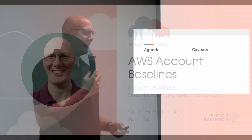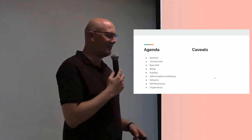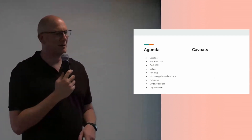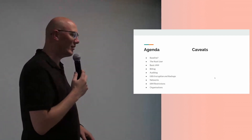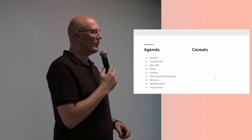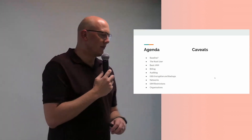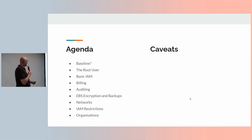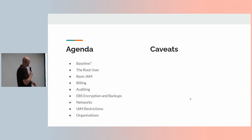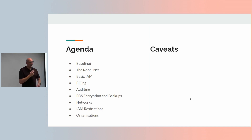Tonight's agenda: we're going to cover what an AWS account baseline is, talk about the root user for AWS accounts, some basic IAM — identity and access management — billing, auditing, EBS encryption and backup — elastic block storage — a bit of networking, some more IAM, and a bit of organizations.